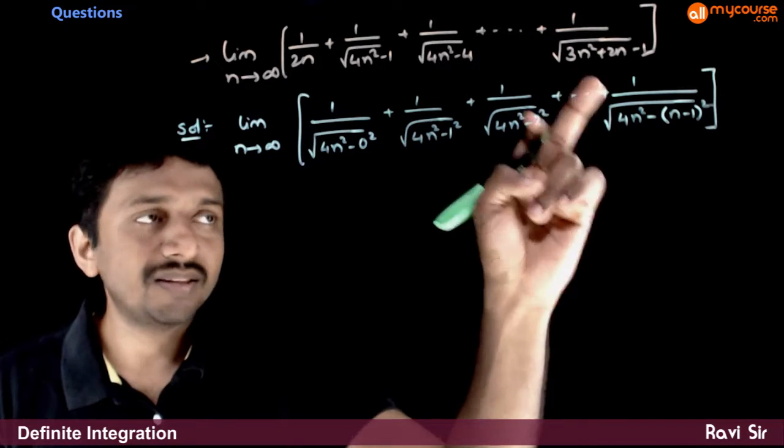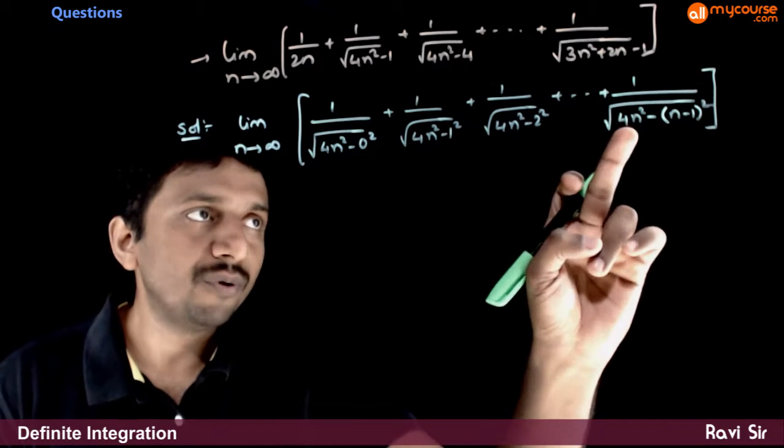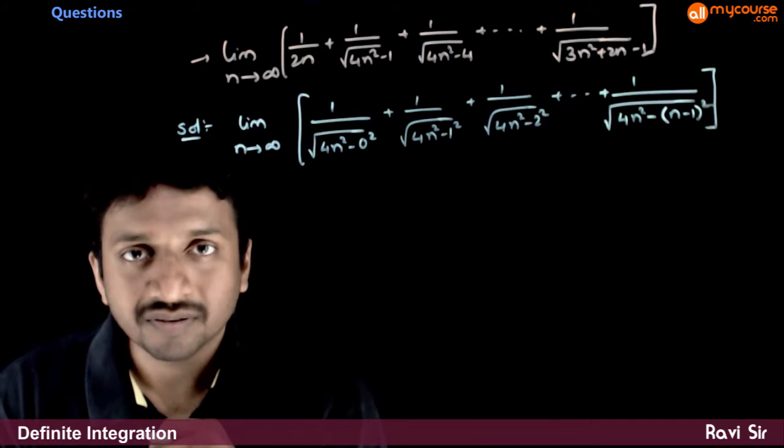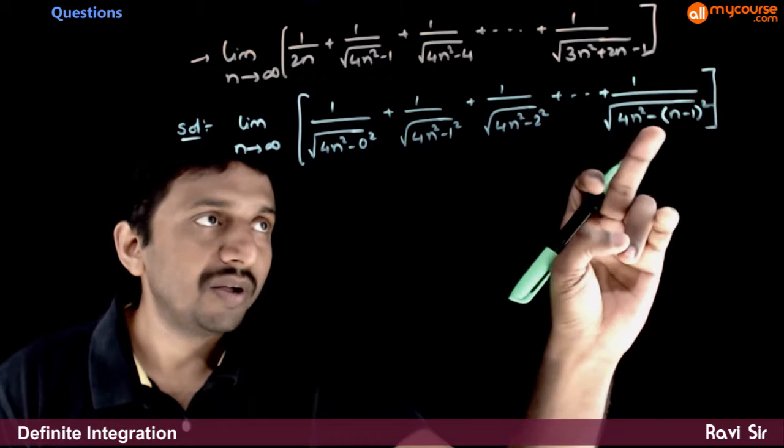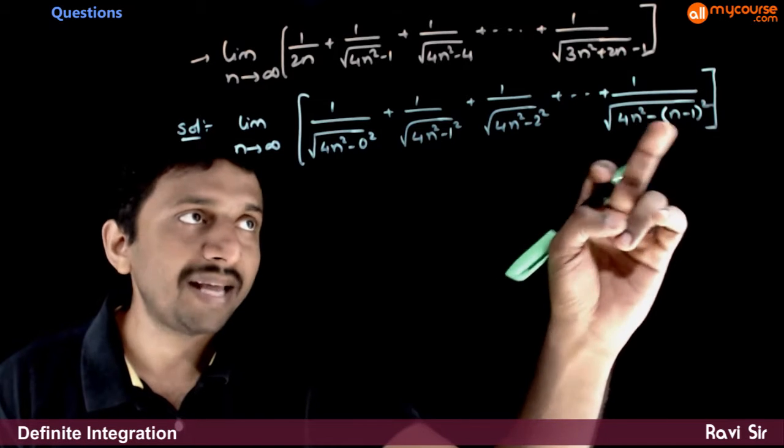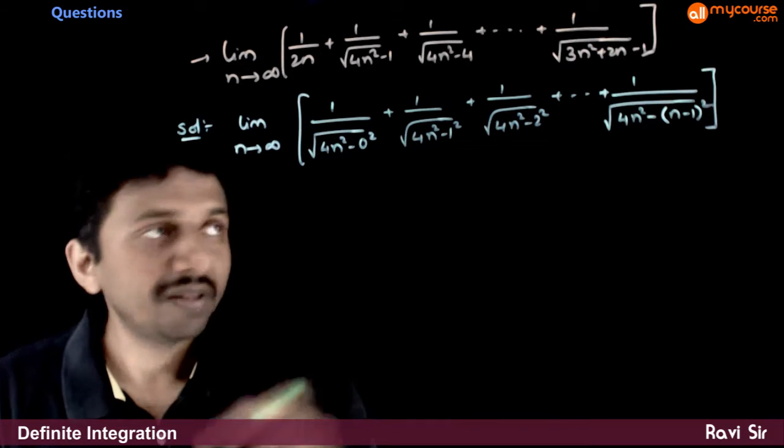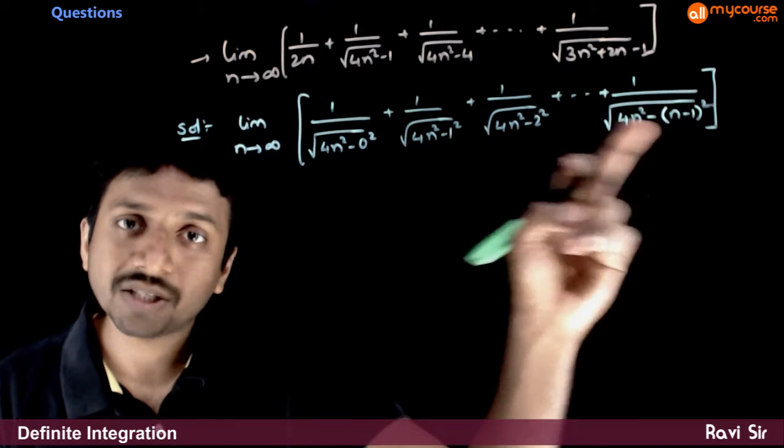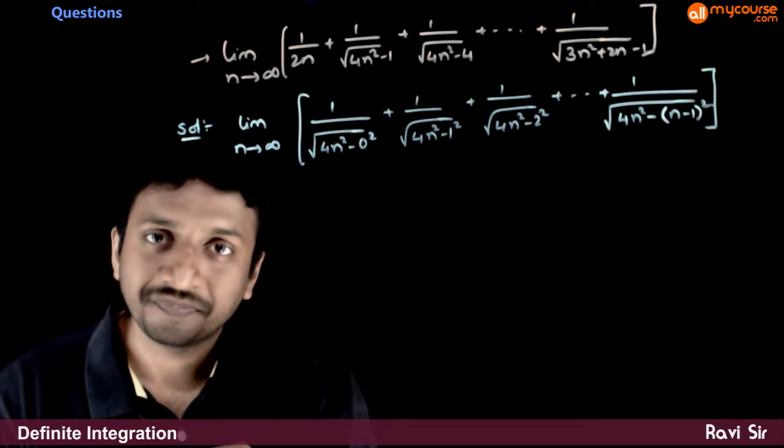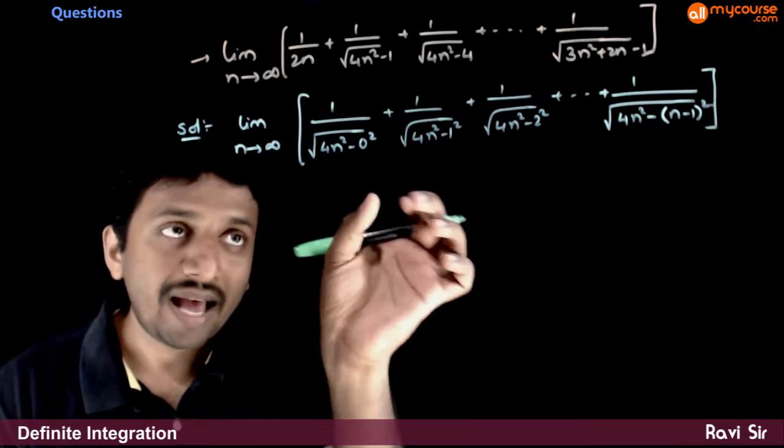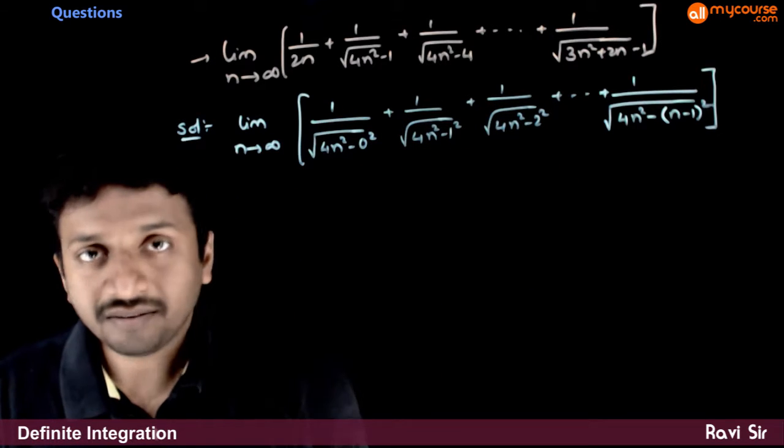Just try to see whether these two are same. 4n square minus n square becomes 3n square. You get a minus 2n from this, minus of minus 2n is plus 2n. You get a plus 1 here, minus of plus 1 is minus 1. I have expressed each and every term in the same pattern.